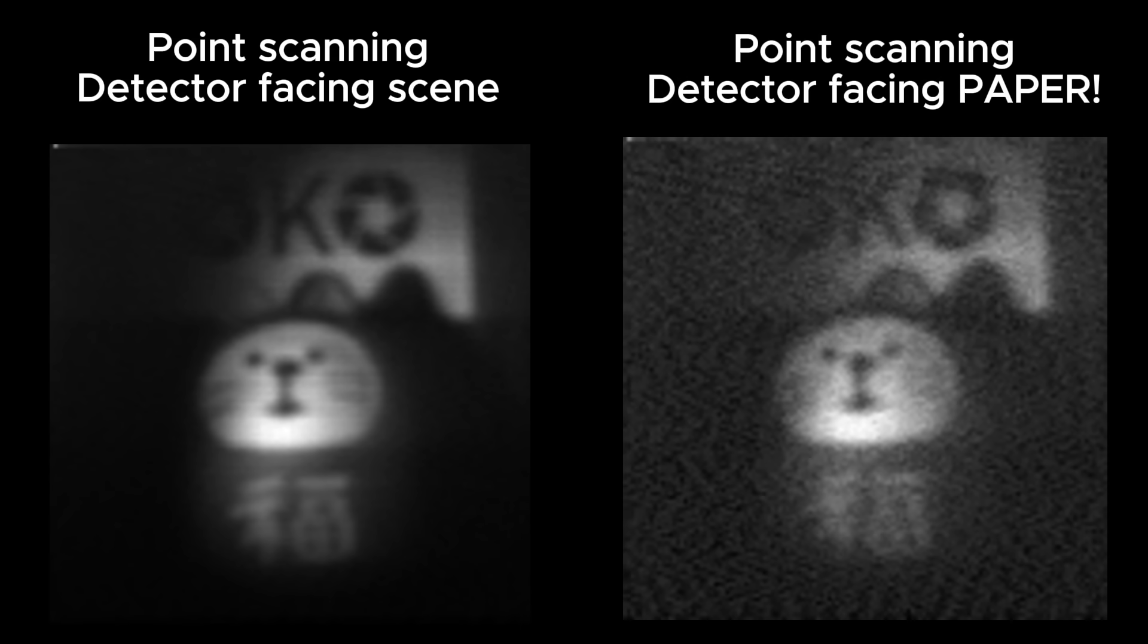As a reminder, here is the previous image collected by point scanning when the detector was facing the scene. And here is the result for the detector facing the paper. So cool. We still get an image of the scene, just like in the dual photography paper.